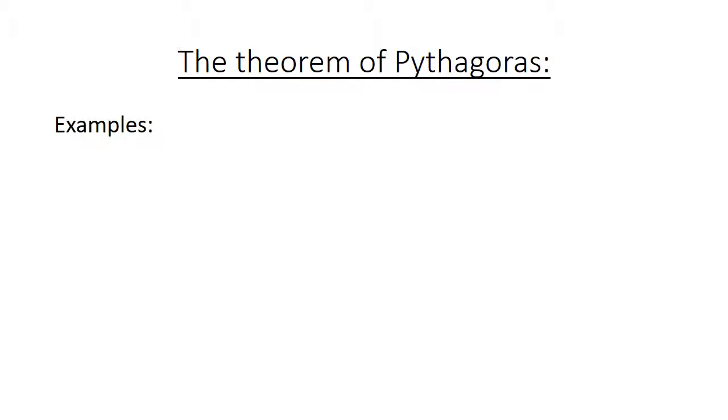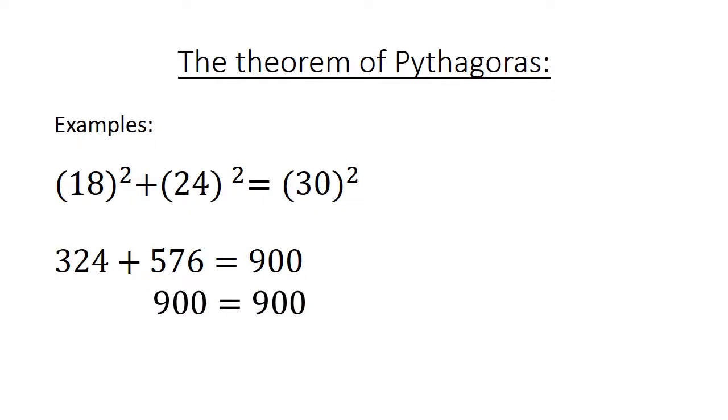The theorem of Pythagoras. Examples. We have here again a triangle. 18 to the power of 2 plus 24 to the power of 2 equals 30 to the power of 2. And we have 324 plus 576 is equal to 900. On both sides it's 900. And if we take the square root of it, the square root of 900 equals 30.